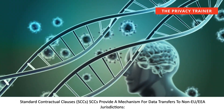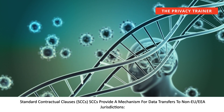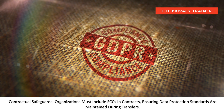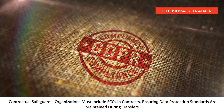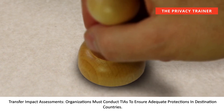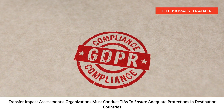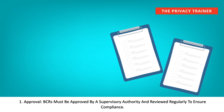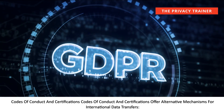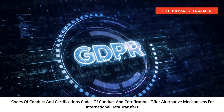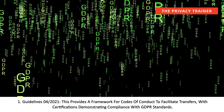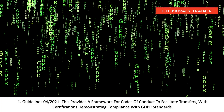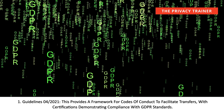Standard Contractual Clauses (SCCs) provide a mechanism for data transfers to non-EU/EEA jurisdictions. Organizations must include SCCs in contracts, ensuring data protection standards are maintained during transfers, and must conduct Transfer Impact Assessments (TIAs) to ensure adequate protections in destination countries. Binding Corporate Rules (BCRs) allow multinational companies to transfer data within their corporate group; BCRs must be approved by a supervisory authority and reviewed regularly to ensure compliance. Codes of Conduct and Certifications offer alternative mechanisms for international data transfers, with Guideline 04-2021 providing a framework for Codes of Conduct to facilitate transfers and certifications demonstrating compliance with GDPR standards.